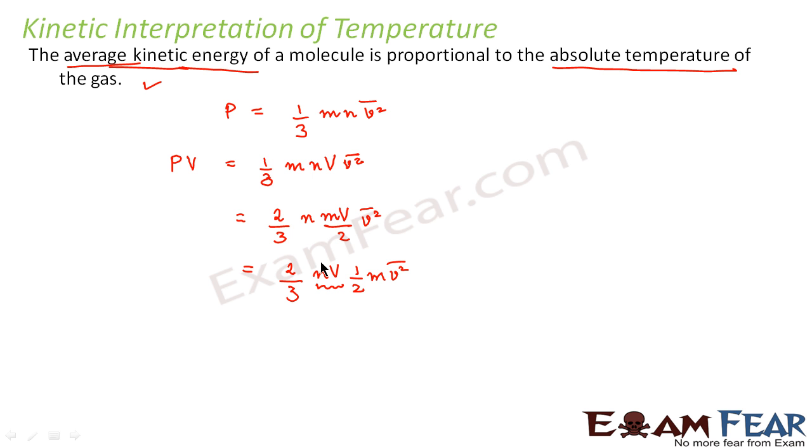So what is this n times V? What do you think small n is? n is number of moles or number density. So n is number of molecules per unit volume, that is number density. So n times capital V will be equal to capital N, that is number of molecules. So this will be N times half m v square bar.